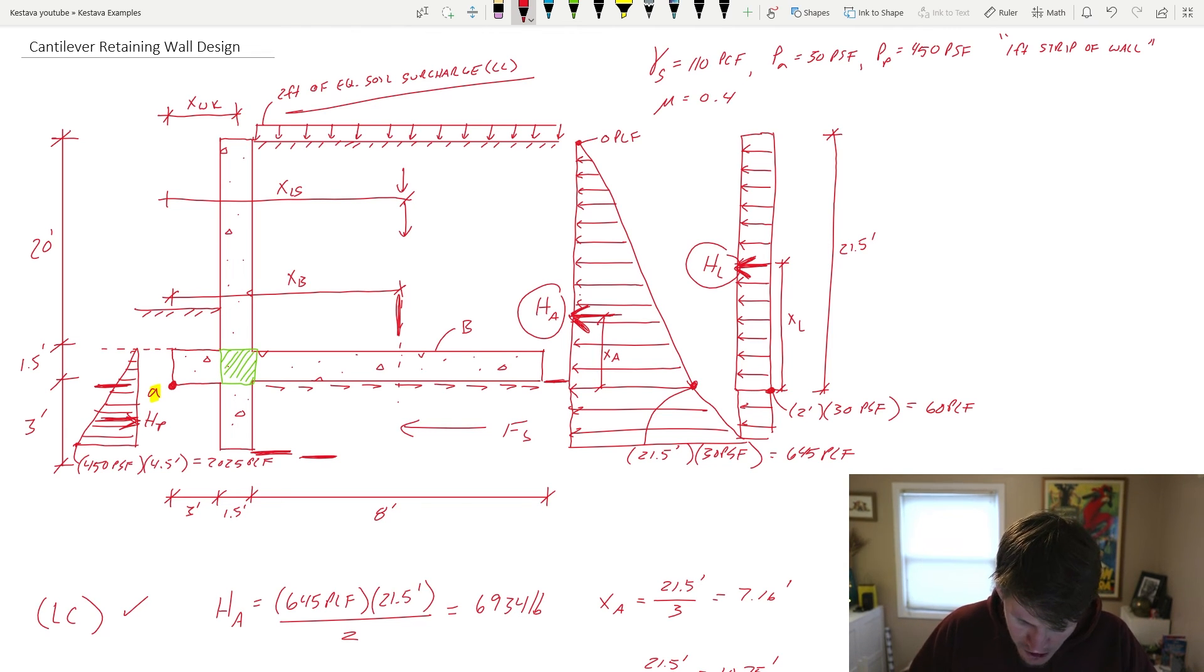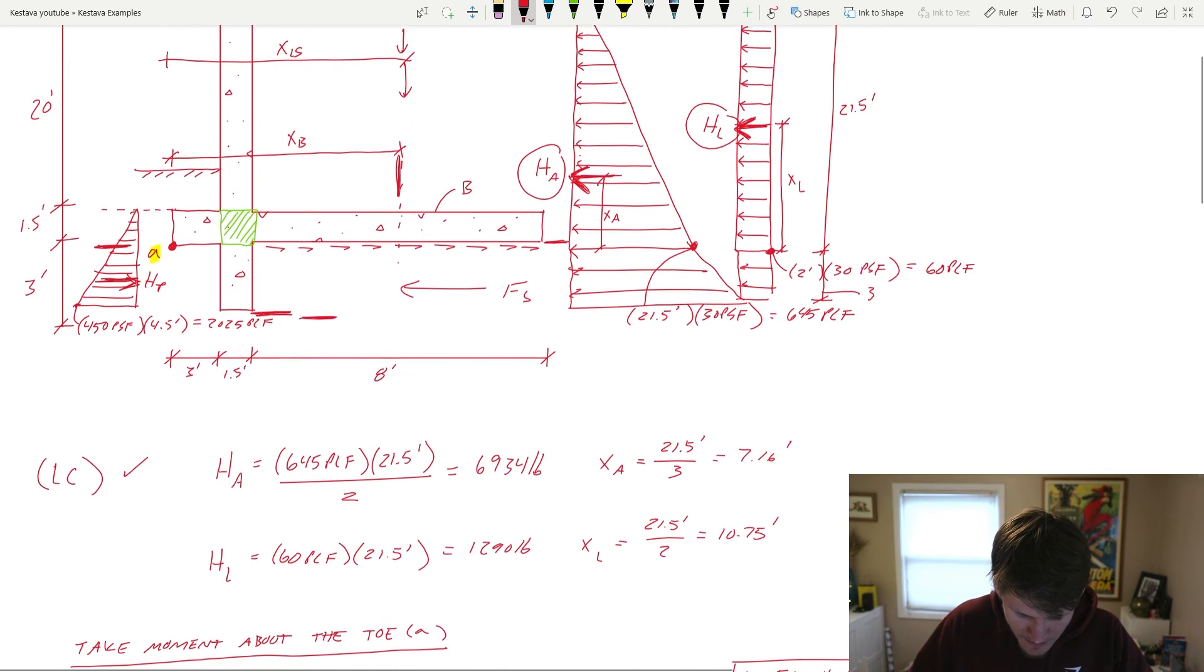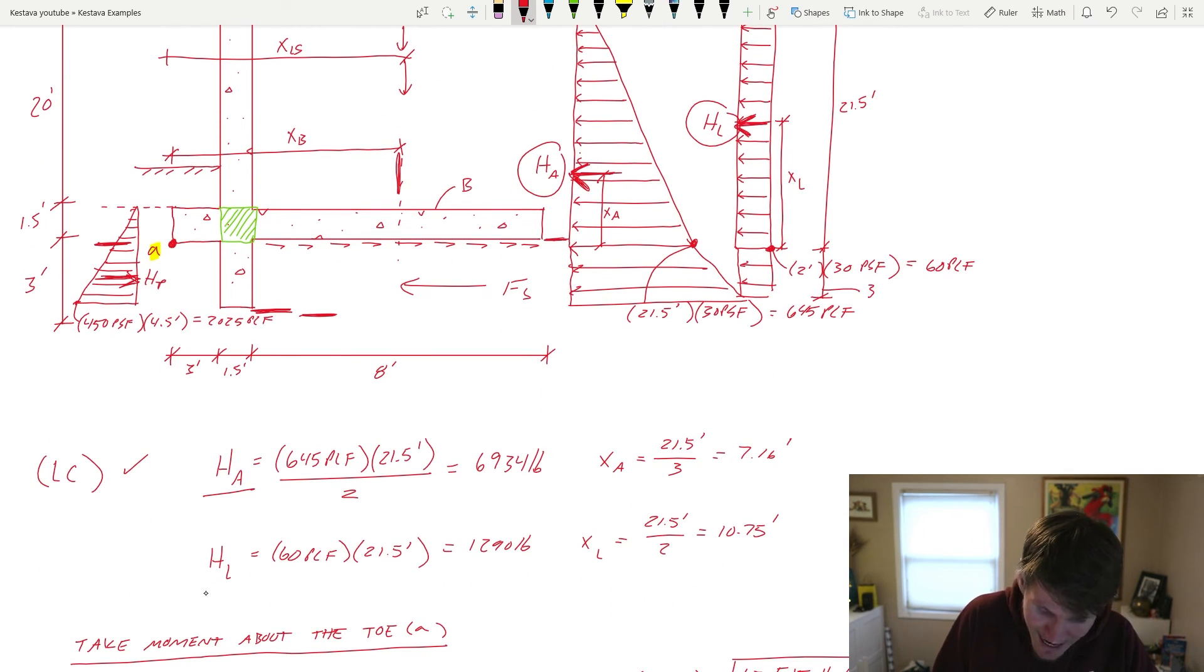So we're adding an additional three feet of depth and I'm drawing over stuff to our demand. So I'm going to redefine HA and HL. I'll do that down below right now.